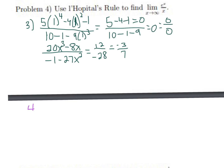In question 4, they bring back e^x. We have the limit of e^x / x as x approaches infinity. If we try substituting, we get e^∞ / ∞, which is essentially infinity over infinity — an indeterminate form that doesn't give us a definable answer. So we try L'Hôpital's rule again.